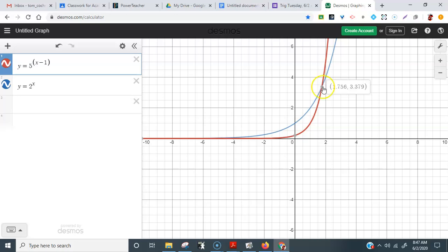So in this case, that's the intersection. That's when the red graph and the blue graph equal each other. Now what we care about here is we care about the x value from this intersection point. So the solution to that equation that we were just looking at is 1.756.